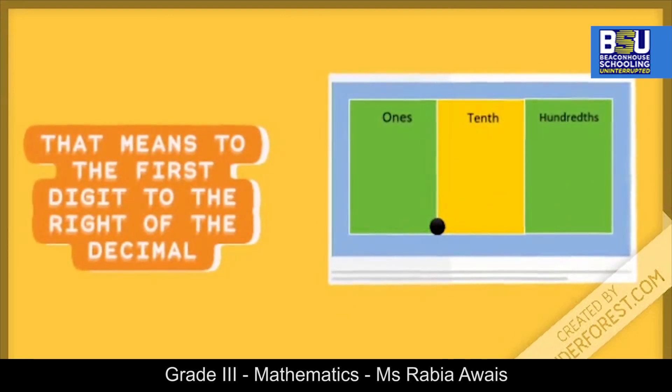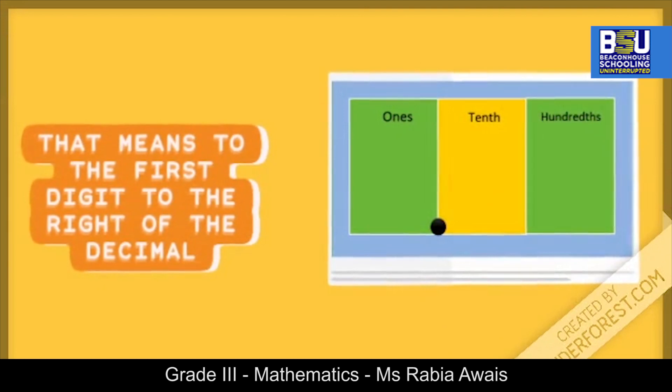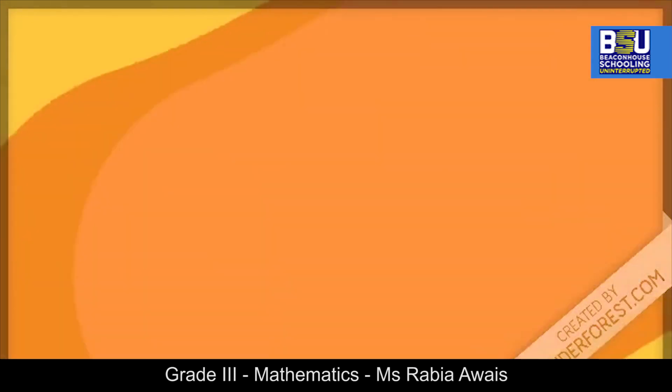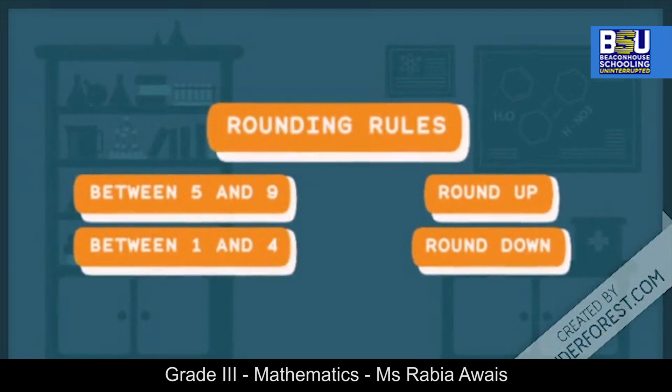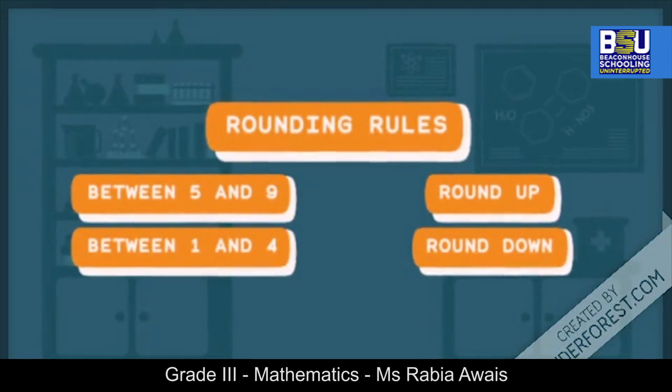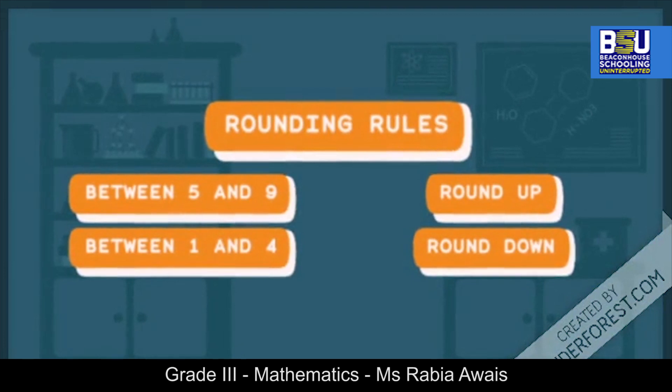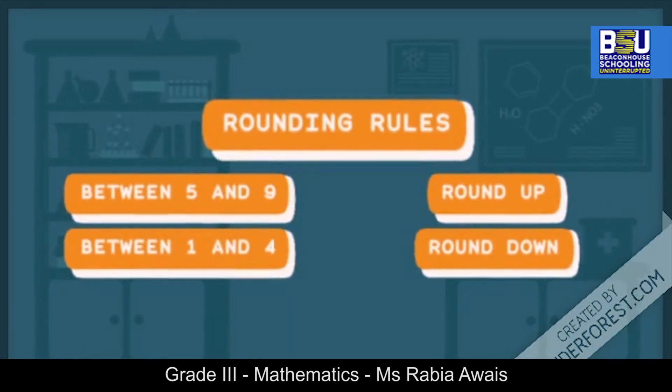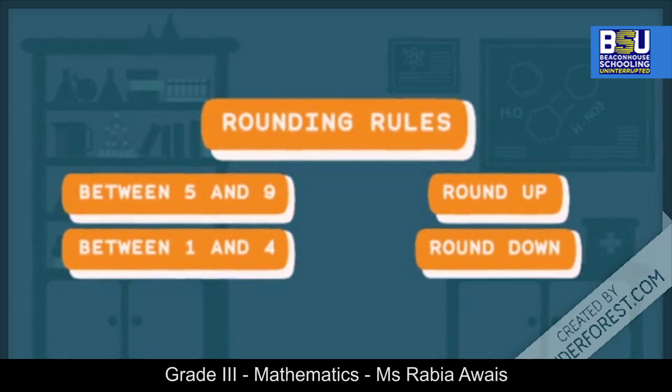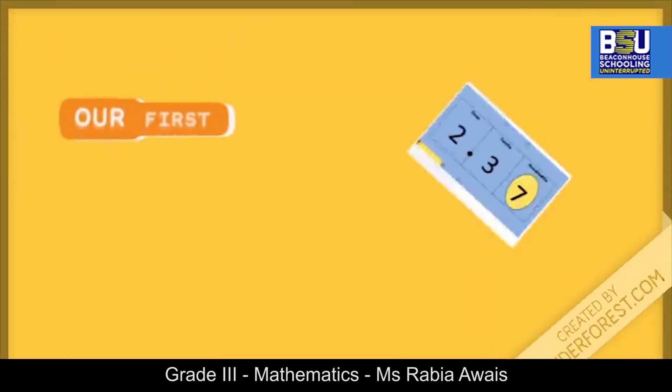Rounding decimals uses the same rules as rounding other numbers. Do you remember the rules of rounding? If a number is five or more, you round up. If a number is four or less, you round down.